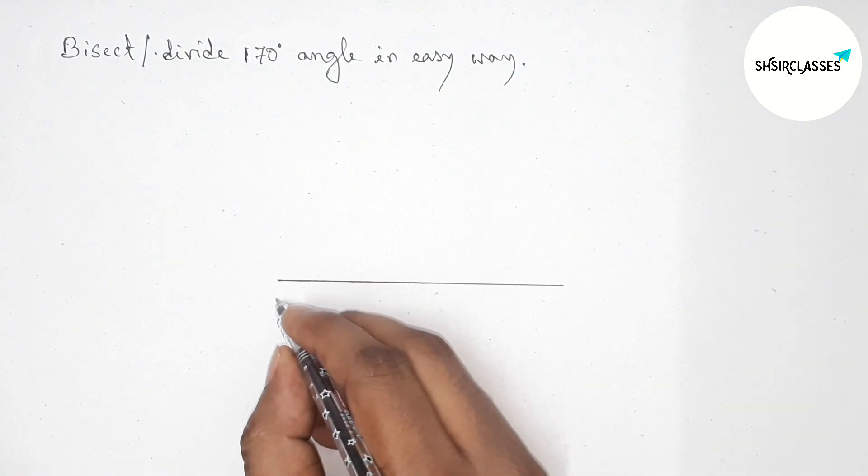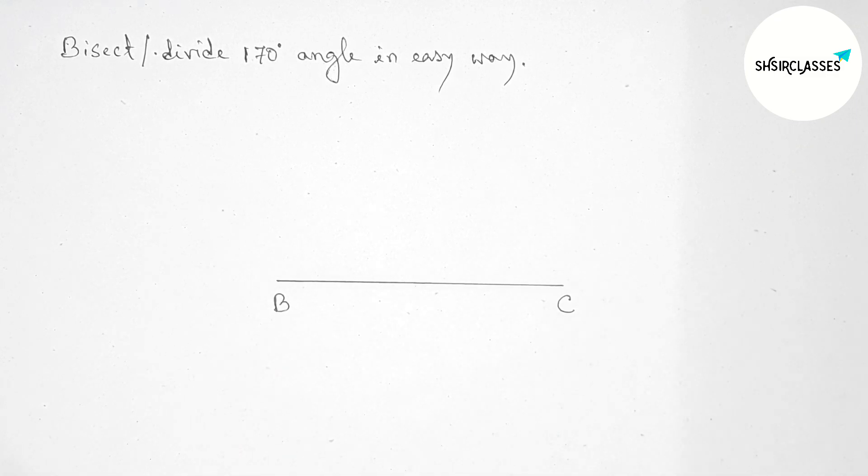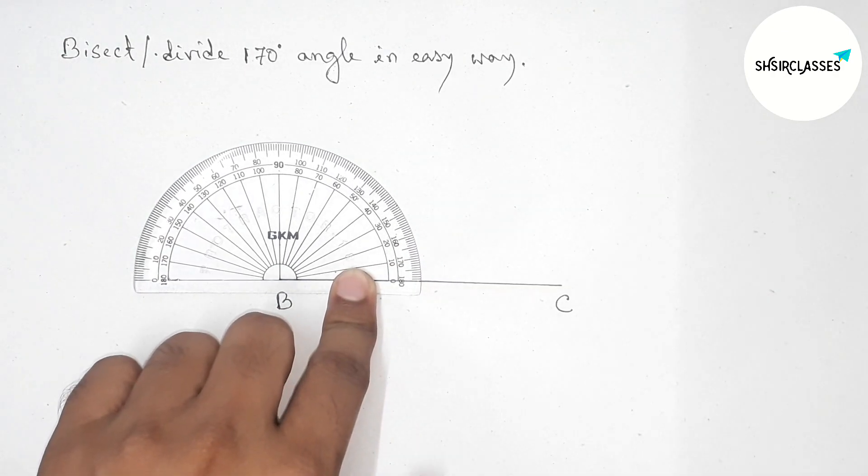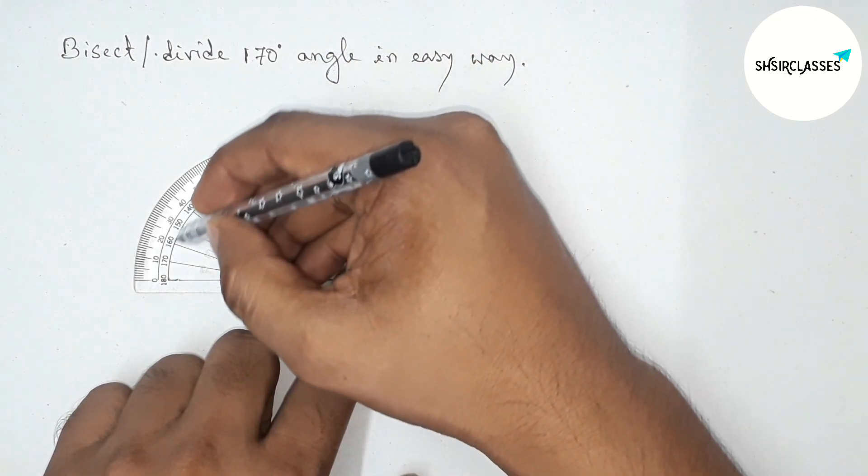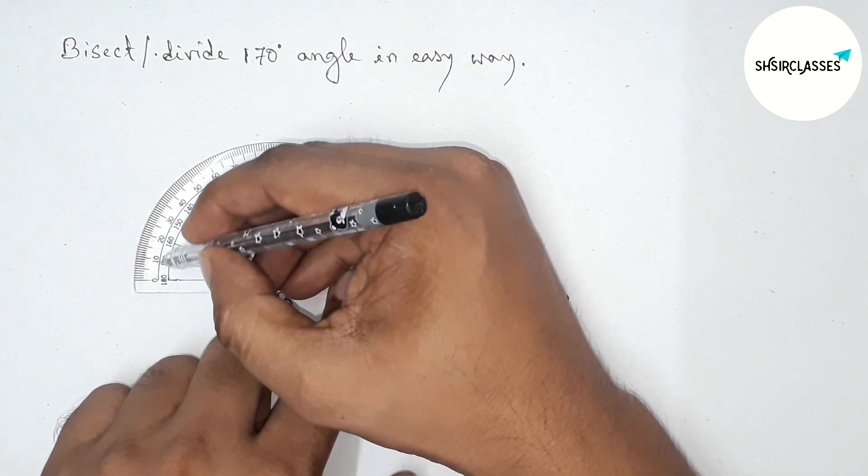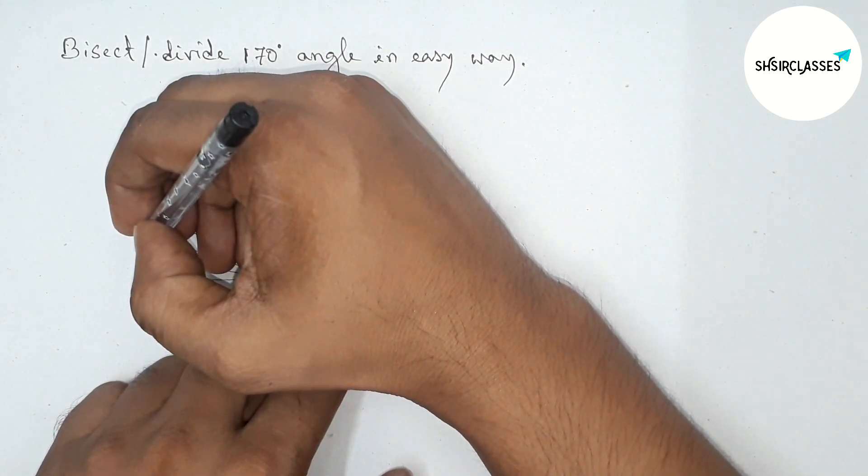Drawing the line this way and taking here point B and here C. Now drawing a 170-degree angle on point B. First, putting the protractor on point B perfectly, then counting. This is 170 degrees, so marking here.